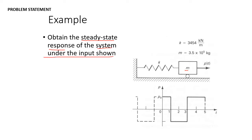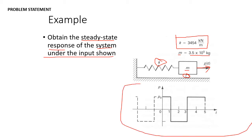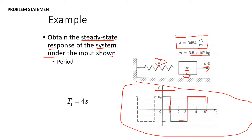We have a mass m, a spring with spring constant k, rolling on a surface with some external load p(t). They tell us our spring constant k is equal to 3,454 kilonewtons per meter, and the mass is 3.5×10⁵ kilograms. They also give us a chart with p on the y-axis and t on the x-axis. We start with p-naught at time zero, going down at t=1, back up at t=3, and down at t=5. The period T₁ is equal to 4 seconds.